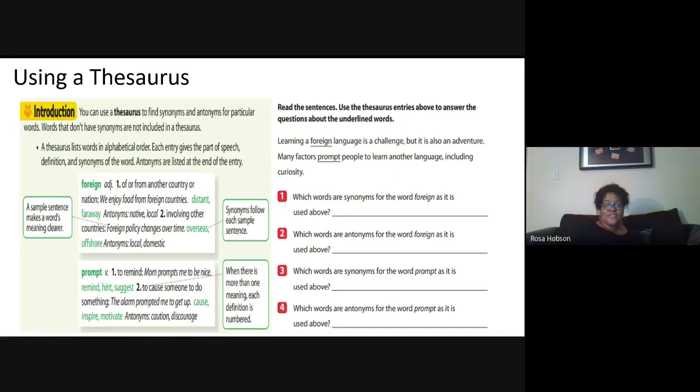Let's look at definition number two, involving other countries. And there's our sample sentence to give us a better meaning. Foreign policy changes over time. The synonyms for this particular meaning are overseas and offshore. And the antonyms, the words that mean the opposite of foreign in this case, are local and domestic.